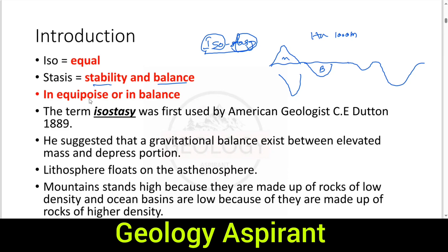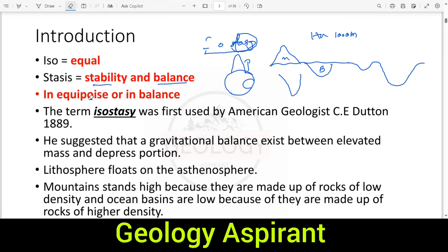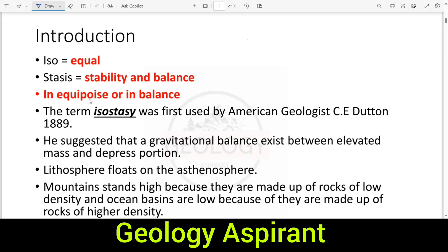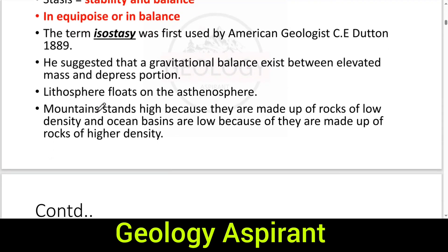How are these features — highlands and depressions — balanced on the Earth? If you imagine the Earth with highlands in some places and depressions in others, how is the land we move on actually balanced? That is the subject of isostasy: the Earth maintaining balance, or a state of equilibrium.